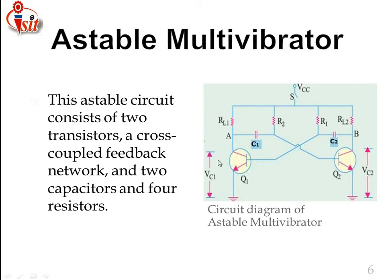The voltage across transistor Q1 is measured as VC1, and the voltage at the collector of Q2 is VC2. VCC is commonly applied through the coupling network, and the remaining terminals are connected to ground via VE. This is the basic structure of the astable multivibrator.